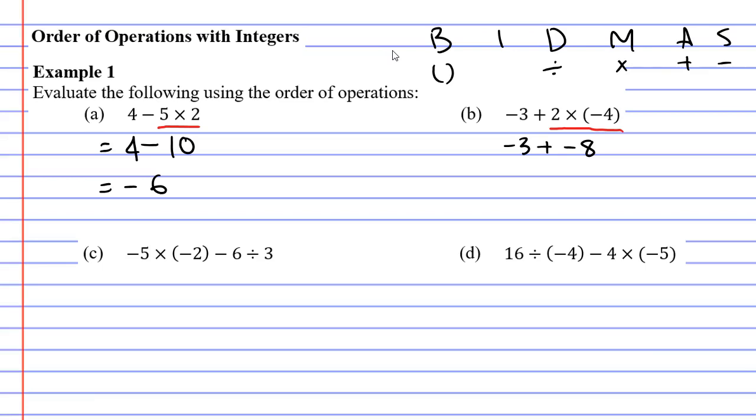Remembering if we plus a negative number we should put that negative number in brackets. It's just best practice. Now as we mentioned earlier if you have a plus sign and a minus sign next to each other you can change that into a single minus sign. So it becomes negative 3 minus 8 which works out to negative 11.